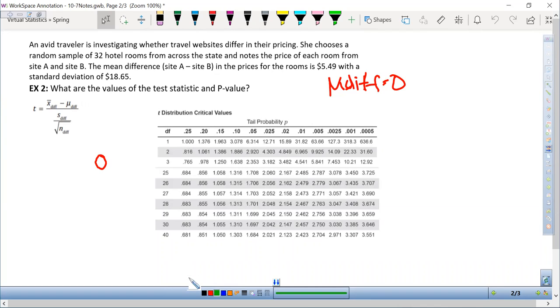Looking at the rest of this, 32 is our n. I'm not going to write the subscripts, just the variables. The mean is 5.49, so that's our x bar. And the standard deviation, or s, is 18.65.